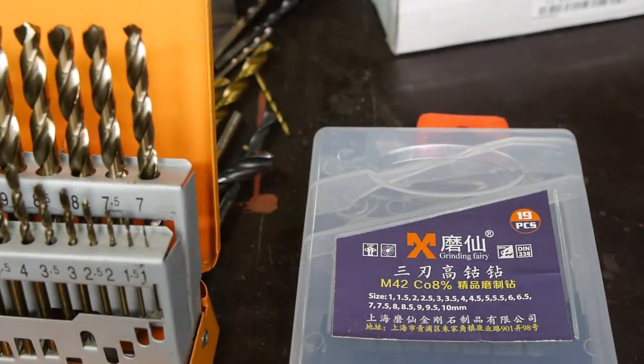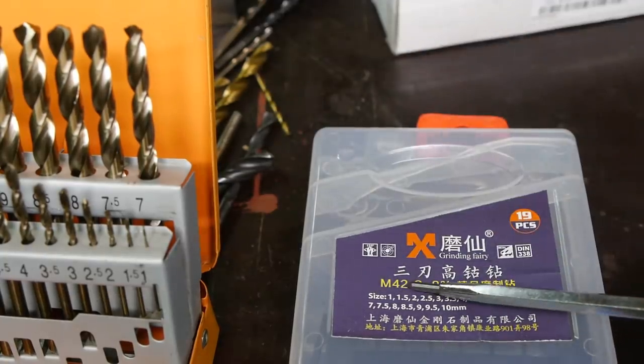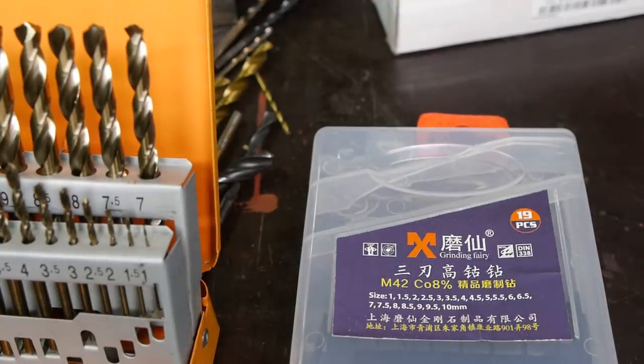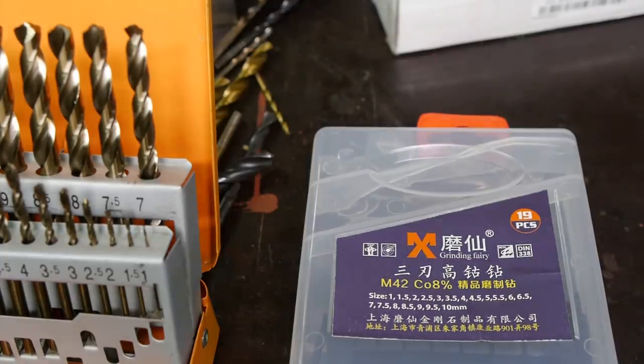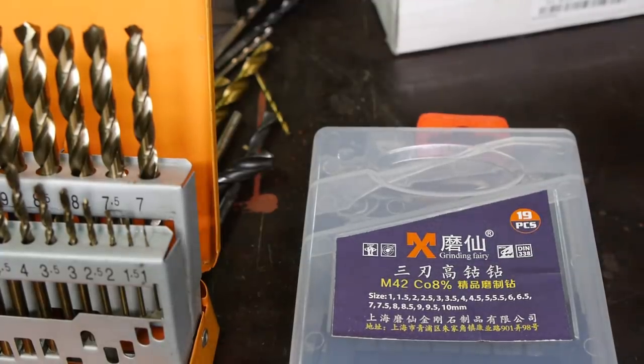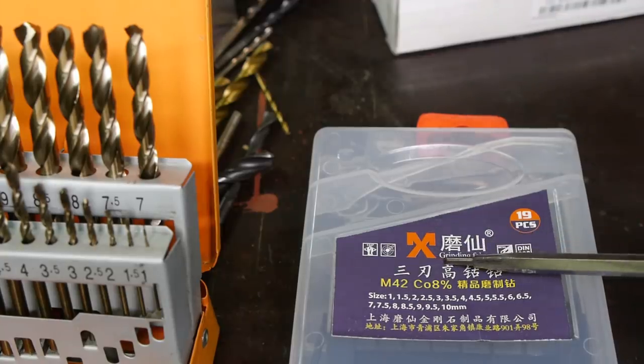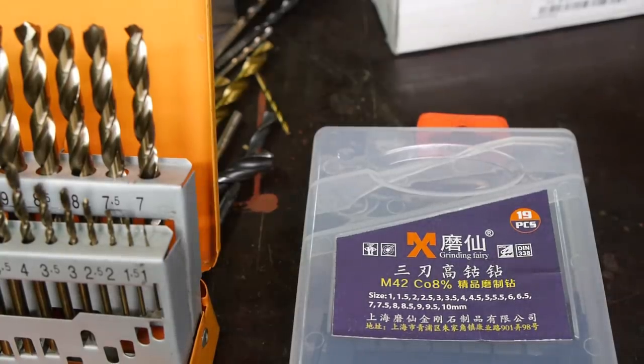According to this plastic container, these drill bits are made from M42 high-speed steel and that probably explains the higher price than what is usual for Chinese drill bits. High-speed steel with cobalt can handle higher temperatures and that's probably a good thing because it says here that these drill bits are grinding fairly, and dull drill bits can get pretty warm.